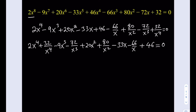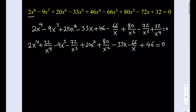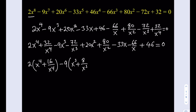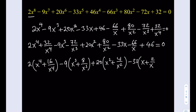I'm going to factor out the greatest common factor for each pair. Taking out a 2 gives me x to the 4th plus 16 divided by x to the 4th. Then minus 9 is the greatest common factor, giving x cubed plus 8 over x cubed, plus 20 multiplied by x squared plus 4 over x squared, minus 33 times the quantity x plus 2 over x, plus 46 equals 0.